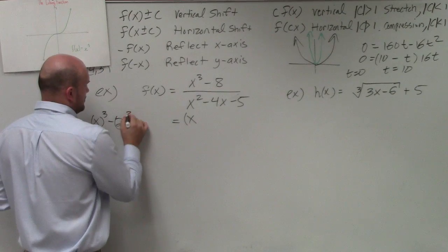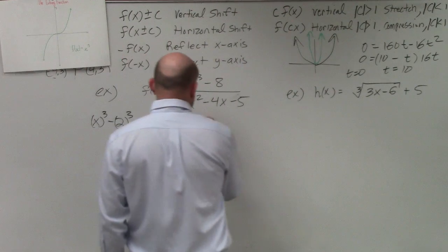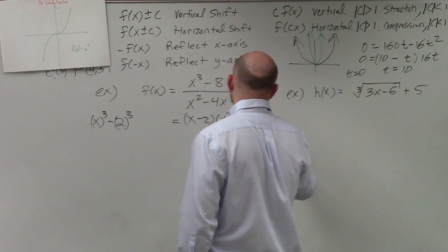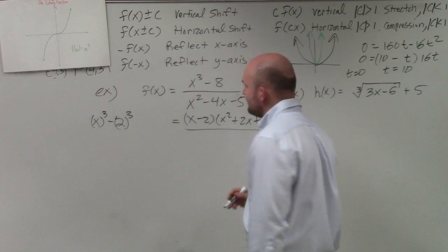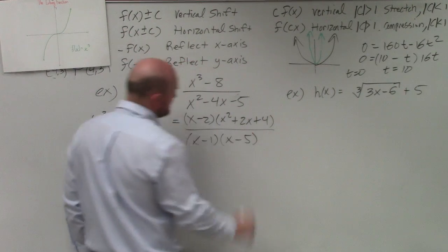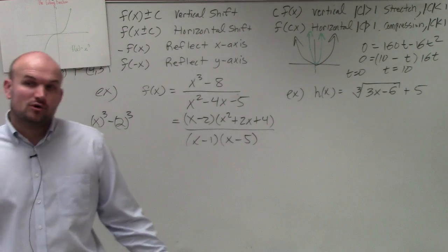So when you factor that, you'd get (x minus 2) times (x squared plus 2x plus 4). When you factor the denominator, you get (x minus 1) times (x minus 5).